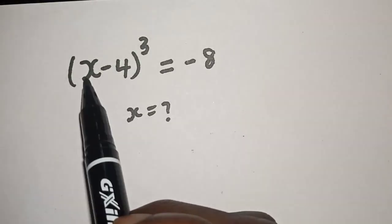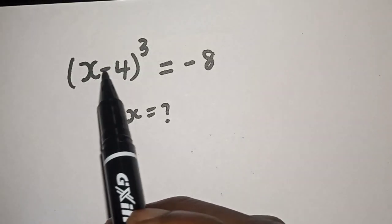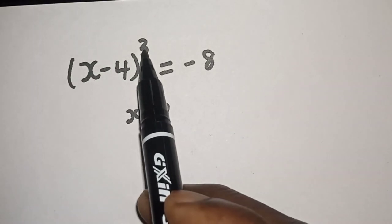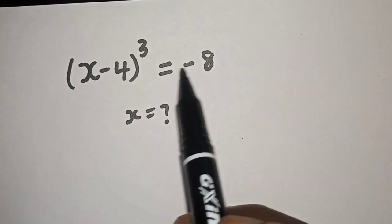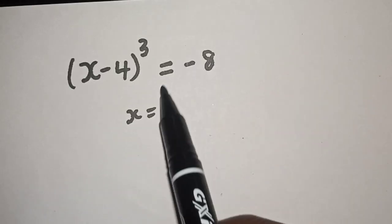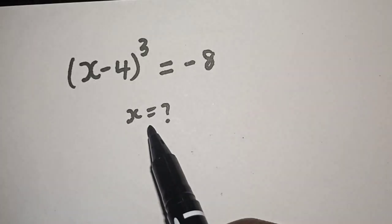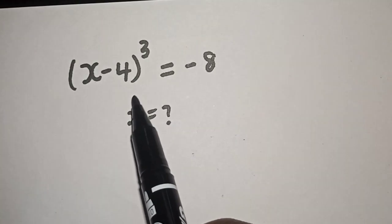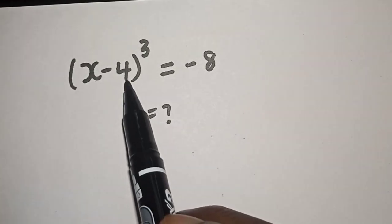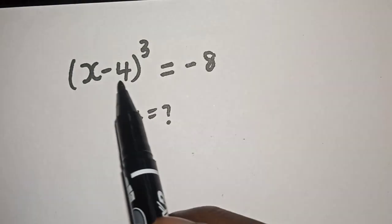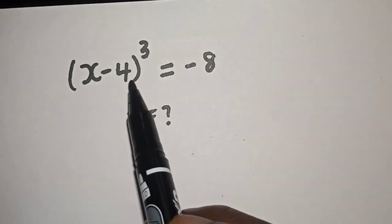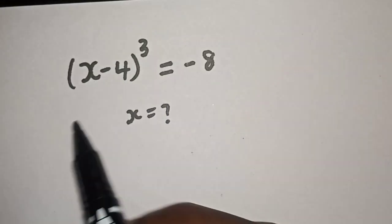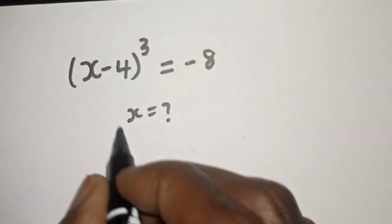Hi everyone, how to solve x minus 4 raised to power 3 is equal to minus 8. But before we proceed, please don't forget to like, share, comment and subscribe.